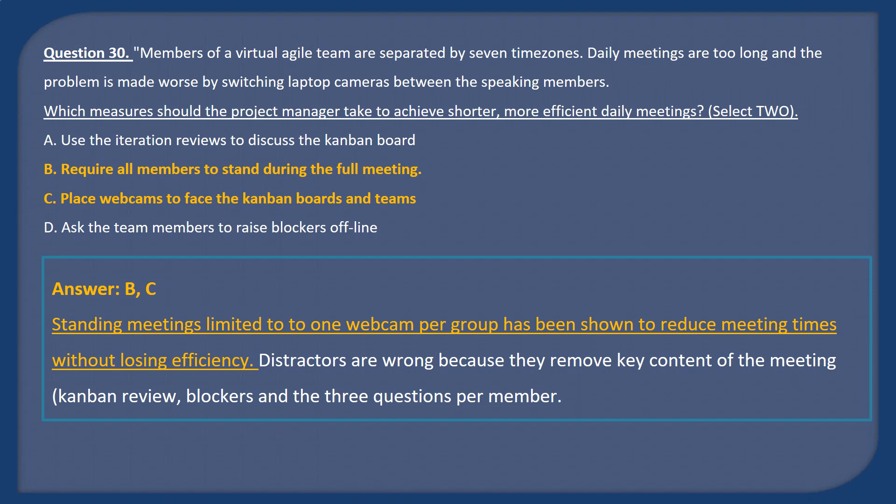Answer B and C. Standing meetings limited to one webcam per group has been shown to reduce meeting times without losing efficiency. Distractors are wrong because they remove key content of the meeting — Kanban review, blockers, and the three questions per member.